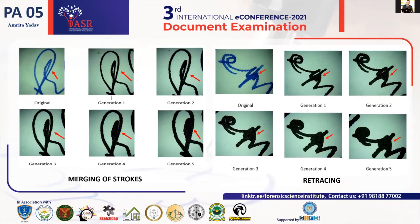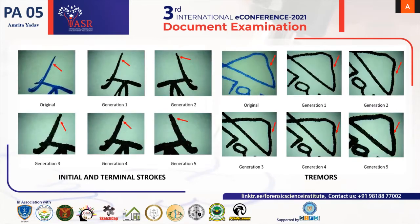Merging of strokes refers to strokes that combine to form a single stroke. It was observed that in G1 and G2 generations, merging of strokes can be identified to some extent, but due to thickening of line quality, strokes get merged, leading to difficulty in analysis. Retracing is a portion of a letter in which a downstroke is superimposed upon an upstroke. In the original sample, retracing is clearly present, but in generation one and two it can only be seen to some extent, and beyond generation one it becomes completely unidentifiable for the forensic expert.